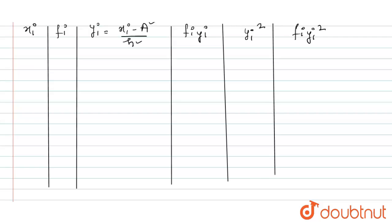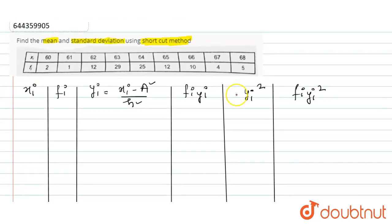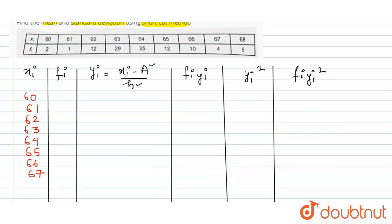So let's start. Now let me write the given observations. The observations given to us are 60, 61, 62, 63, 64, 65, 66, 67, and the last observation is 68. Right, so let's write the corresponding